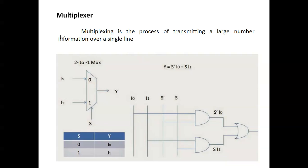A multiplexer is a process of transmitting a large number of signals over a single line — many inputs converted into one output. This is a 2-to-1 multiplexer, so there is one select line. If the select line is zero, the output will be I0; if it is one, you will get I1.